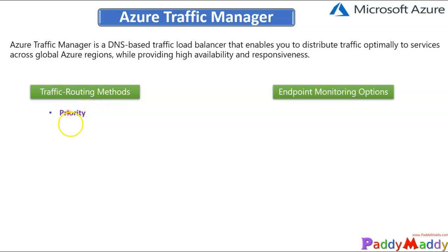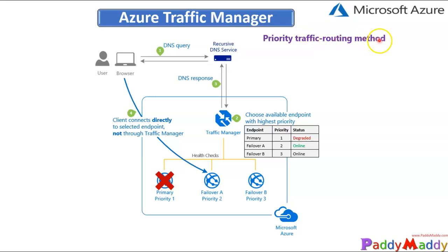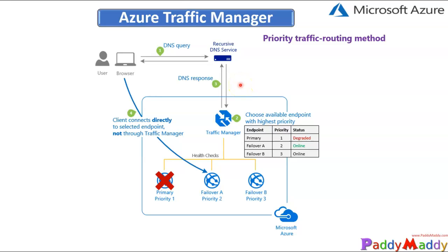The first routing method is priority-based routing. You can have a primary service endpoint for all traffic and assign other priorities as backup in case the primary or backup endpoint becomes unavailable. For example, you can set the primary as priority one — Traffic Manager always tries to reach it first. If it fails, it falls over to failover A at priority two. If that also goes down, it goes to failover B at priority three.